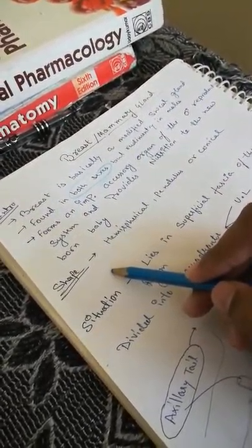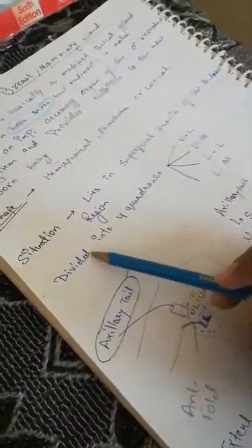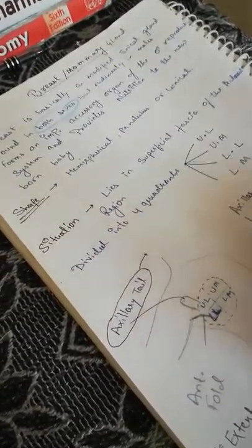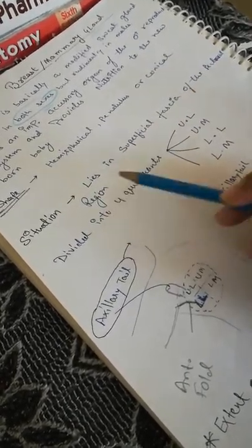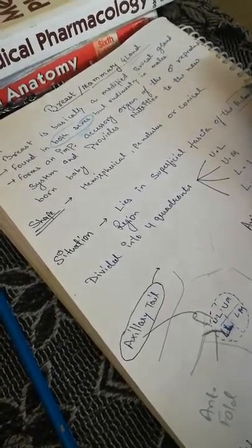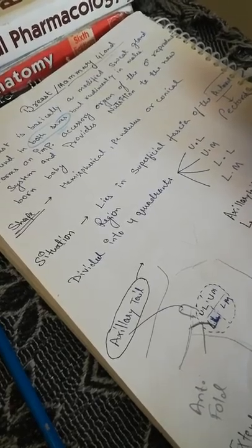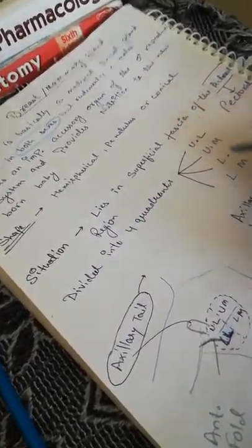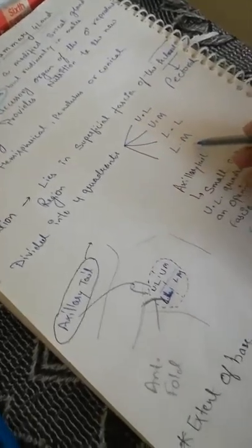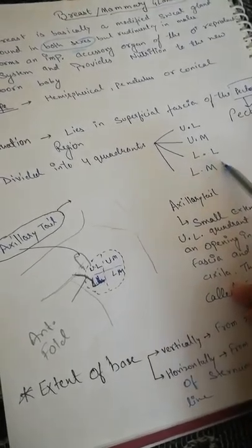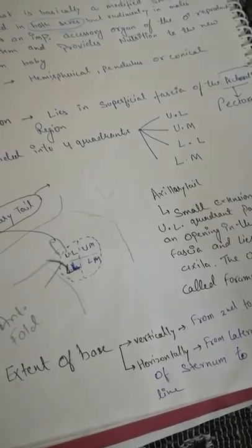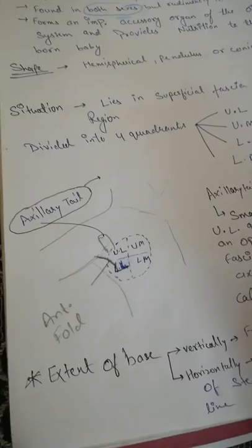Shape: it may be of various shapes — hemispherical, pendulous, or conical. Situation: it lies in the superficial fascia of the pectoral region. It is divided into four quadrants: upper lateral, upper medial, lower lateral, and lower medial.